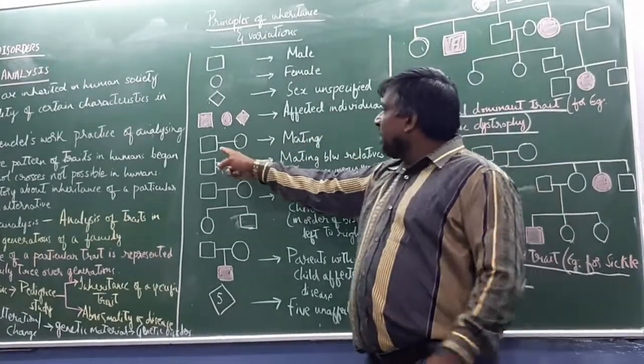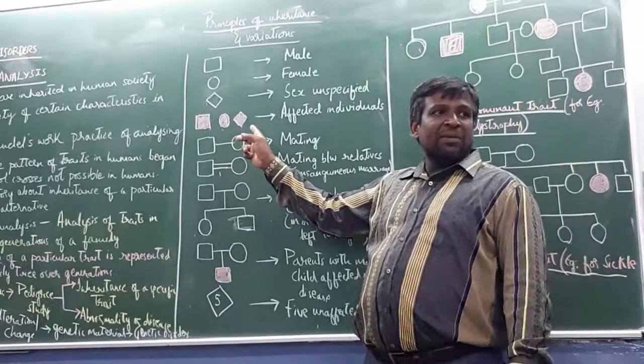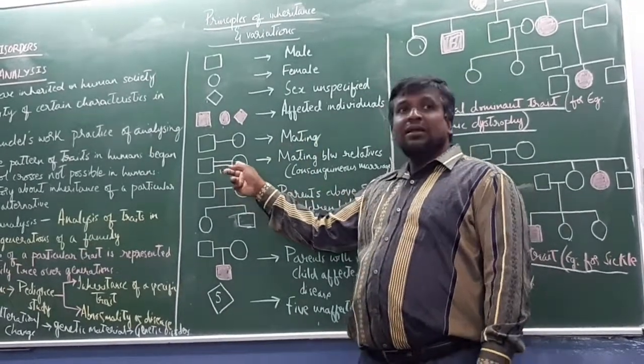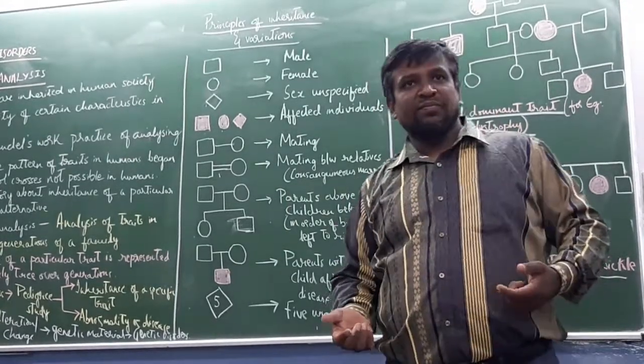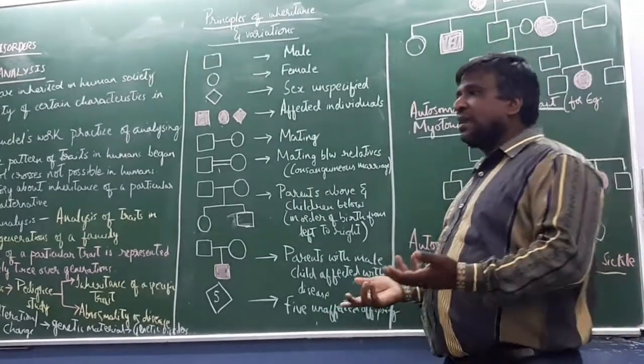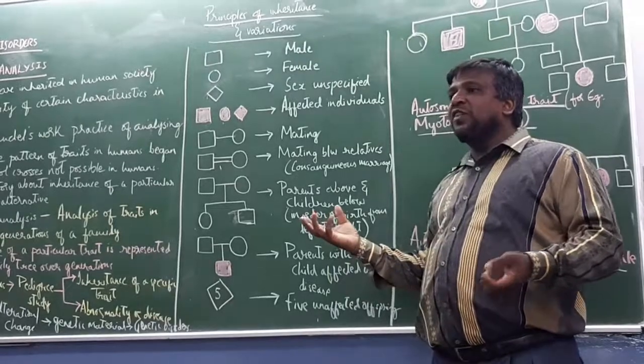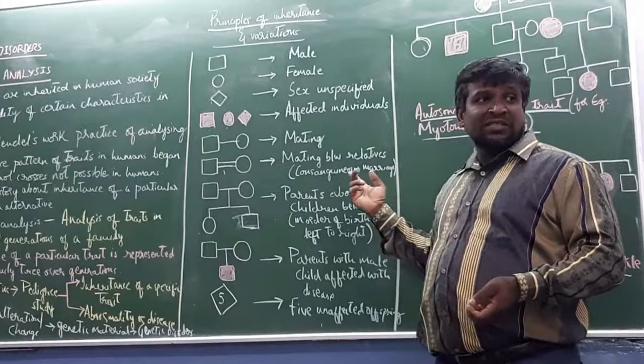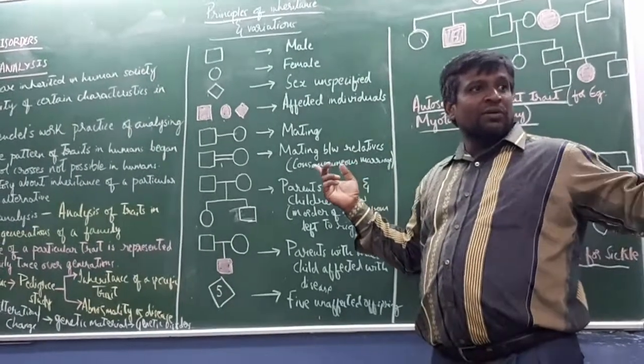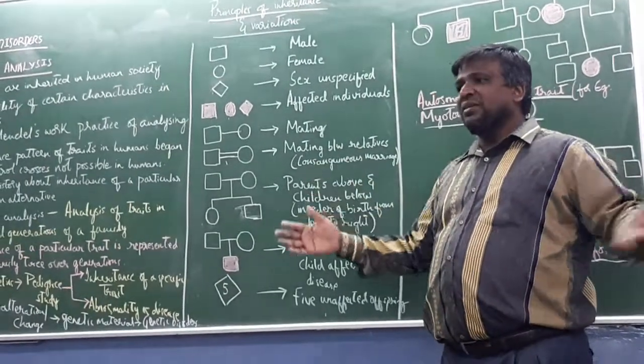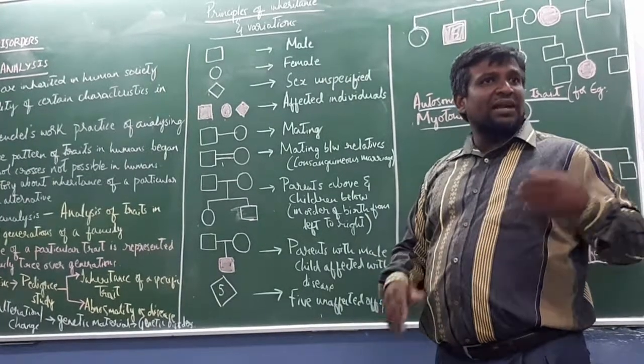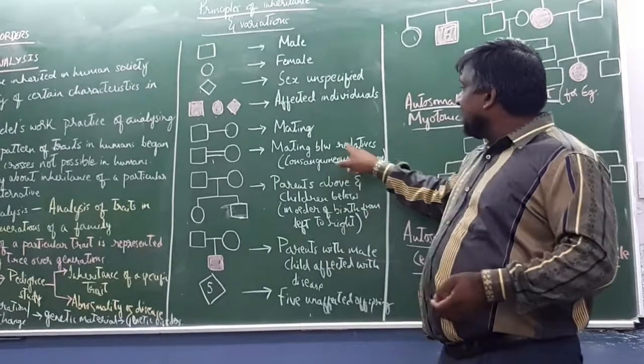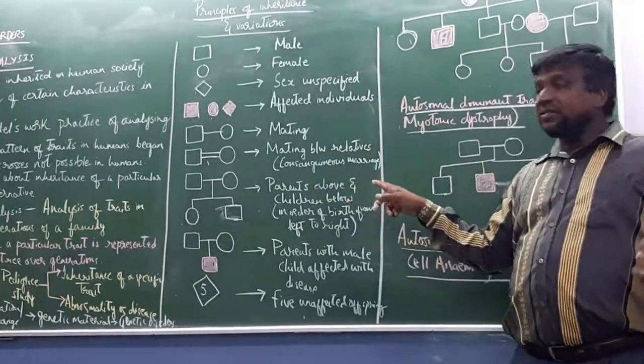This symbol attached between a male and female indicates mating. If there is double line, it indicates mating between relatives - consanguineous marriages. Different people within the family marry. We call it consanguineous marriages. Mating between relatives.